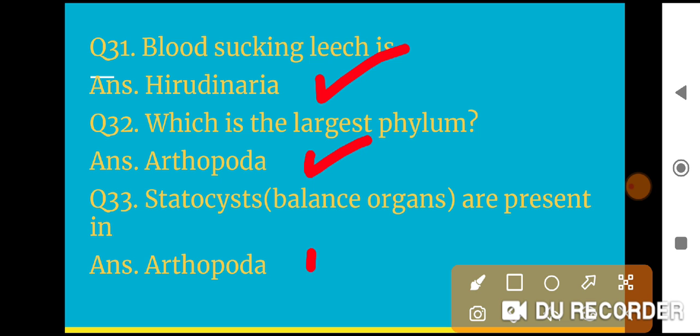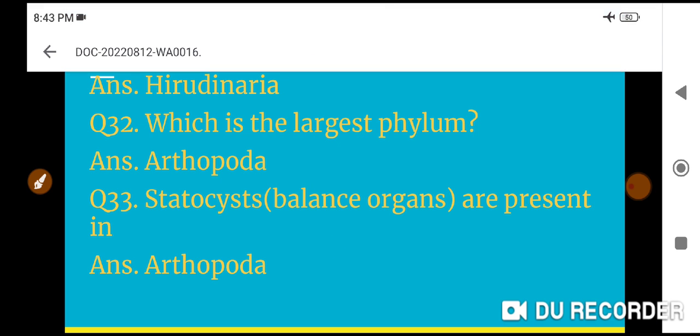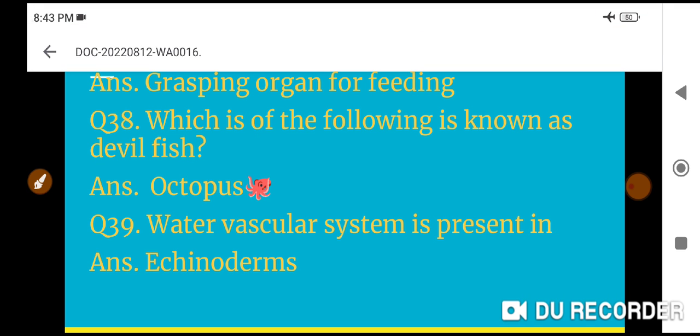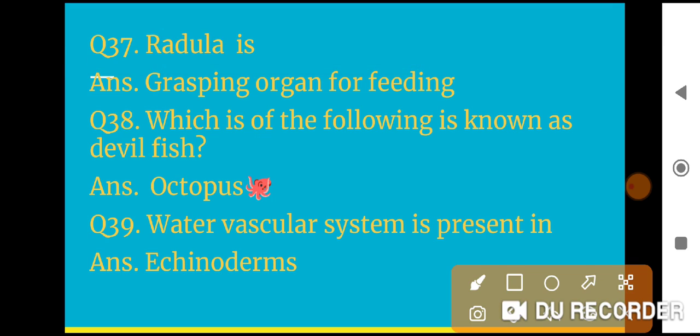Question 33: Which is the largest phylum? Arthropoda. Question 34: Statocyst, that is balance organ, are present in Arthropoda. Question 35: Excretion in Arthropoda takes place through Malpighian tubules. Question 36: Jointed appendages are present in Arthropoda.